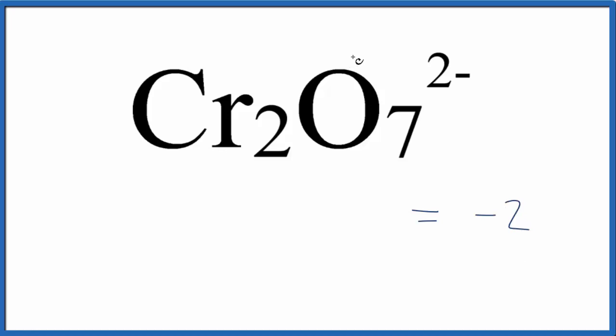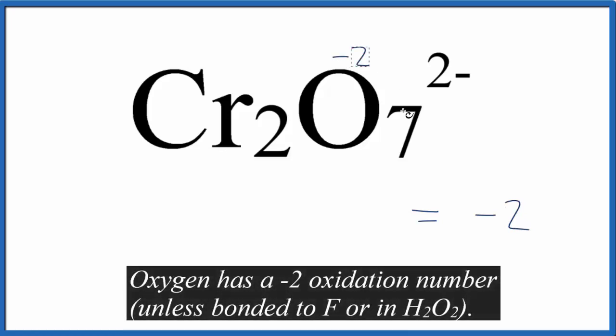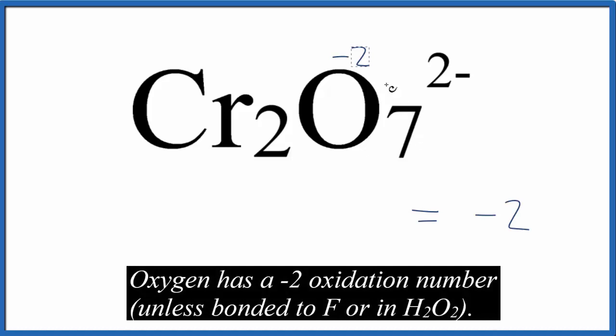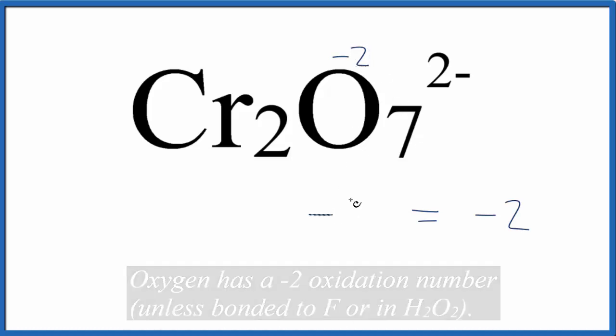We also know that oxygen, its oxidation number, is minus 2, and we have 7 of them. So 7 times minus 2, that gives us minus 14.